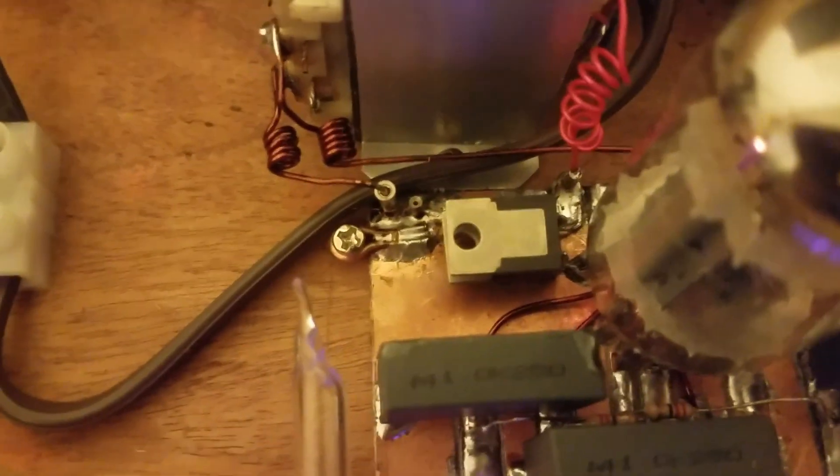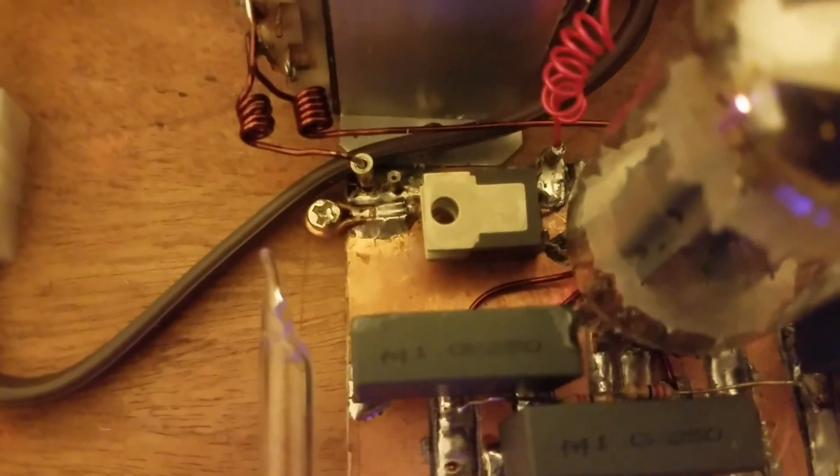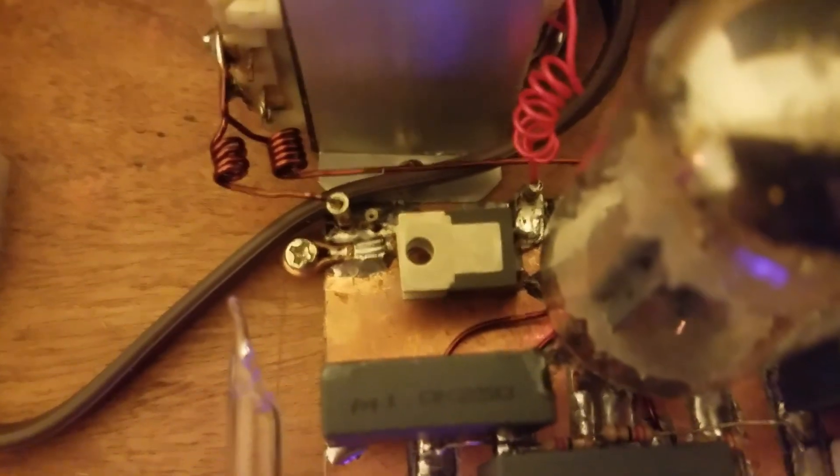Right there is just a resistor in series with the winding for the tube filament because that puts out about 6.5 volts and the tube needs 6.3. So that just drops it a little bit.